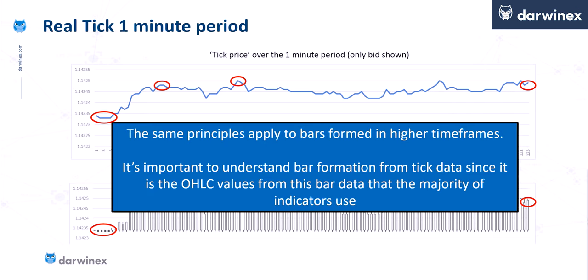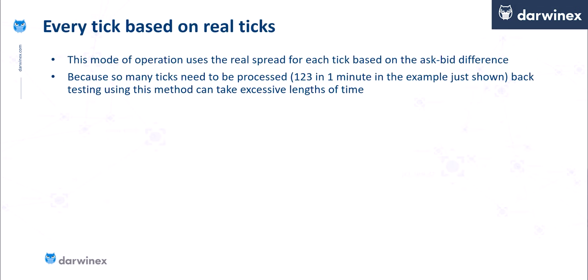Although I've shown a one minute bar here, the same principles exactly apply for the generation of higher timeframes. But why should we be concerned about this if we're using tick data? It's important because it's the open, high, low, and close values from bar data that the majority of indicators use. So regardless of whether you're using tick data or not, your indicators are still using bar data to calculate their values. When we use this mode in a backtester it does use real spread from each tick based on the ask-bid difference, which is a good thing. But because so many ticks need to be processed — 123 in this one minute period — backtesting using this method can take excessive lengths of time.